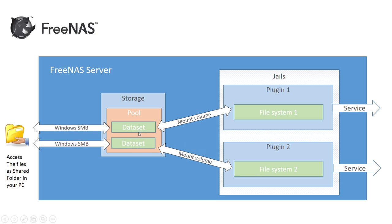You can also access these datasets as a shared folder from outside your FreeNAS server using Windows SMB. The beauty of this is that once you set up your server, you don't have to manually use a monitor or keyboard to access it. After setup, the server will have no display or peripherals, and you can control the whole thing remotely from your laptop or personal desktop.